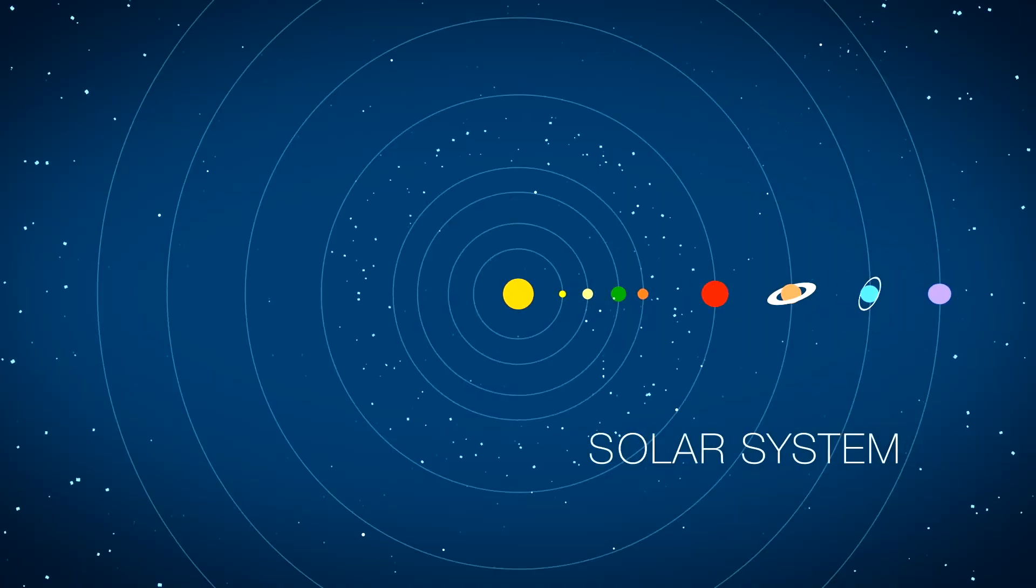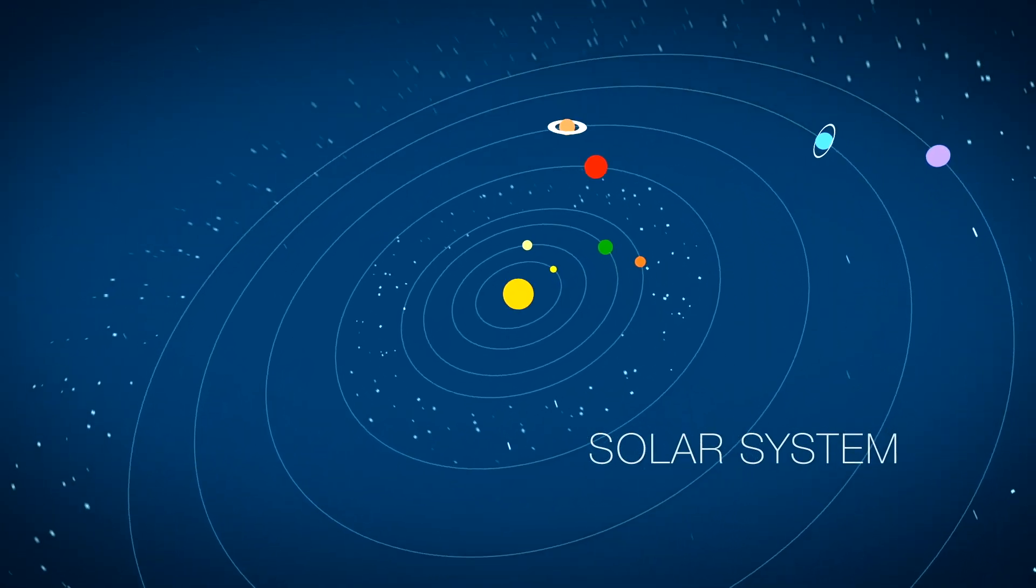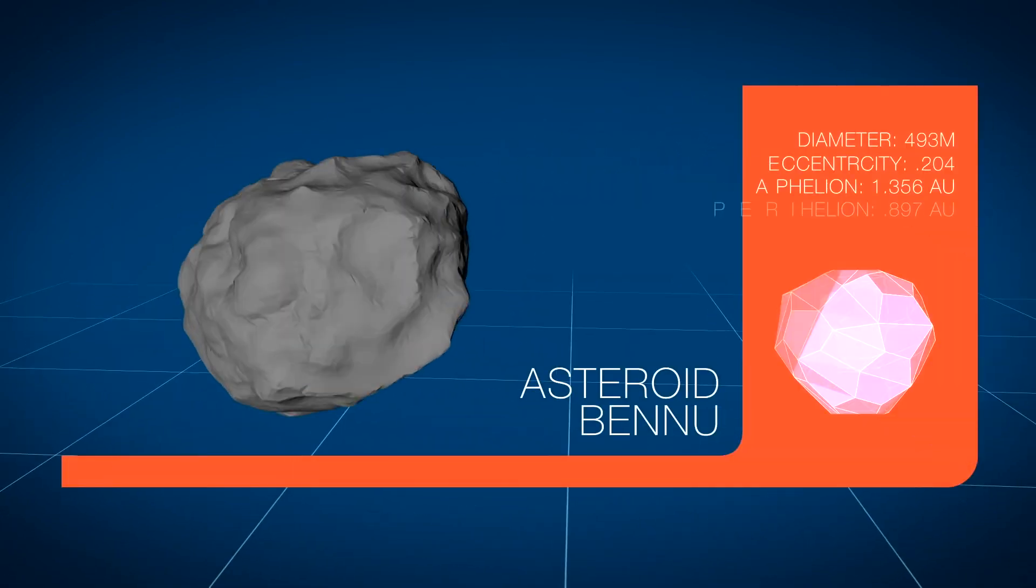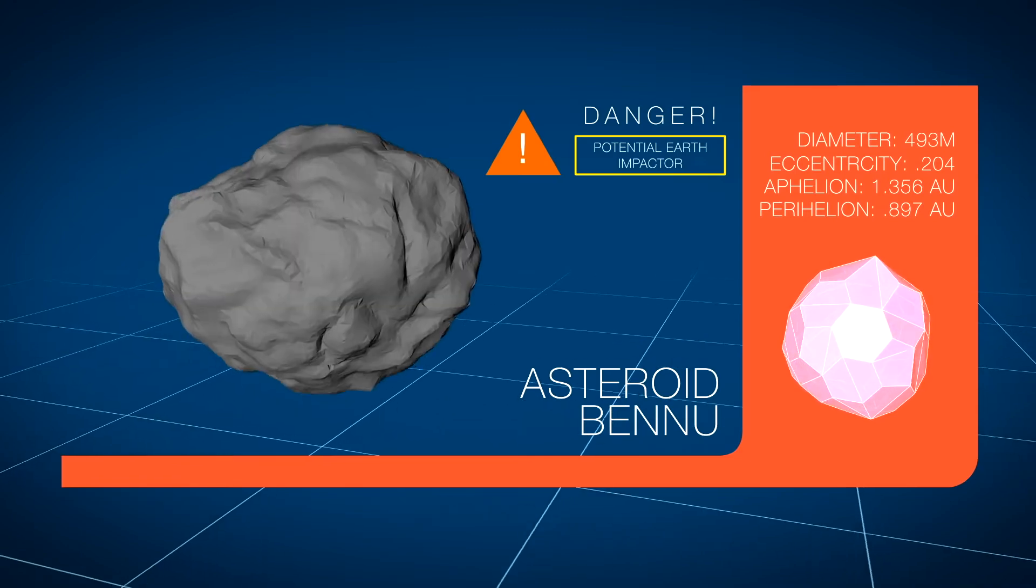From a distance, everything in our solar system appears to be in its place. However, if you take a closer look, sometimes you can find asteroids, like Bennu, leaving their home in the inner asteroid belt and passing very close to Earth.